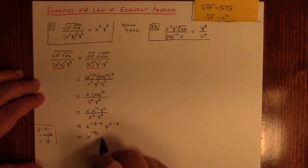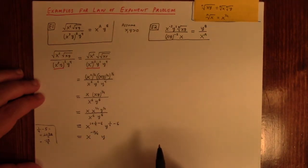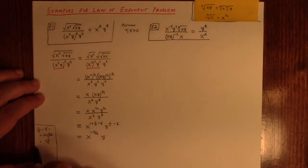And then y to the, let's see here. I'll do my arithmetic scratch work over here. Of course, if you have a calculator handy, you can use it. I'm just too lazy to go get it. 1 minus 24 over 4. So, it looks like the y exponent is minus 23 over 4.